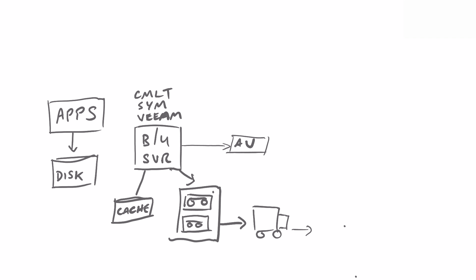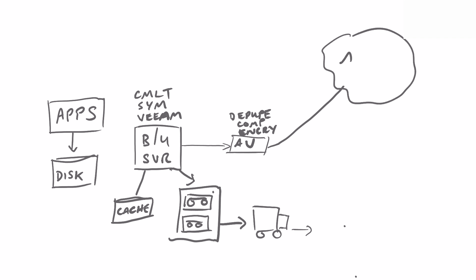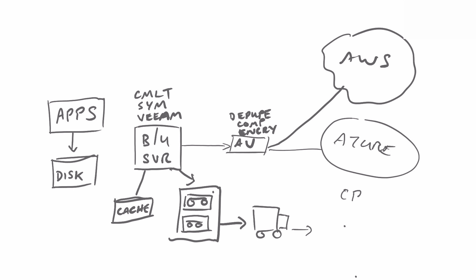AltaVault will do inline dedupe, inline compression, and inline encryption, and then send that data to a cloud provider of your choice. The most common ones are AWS or Azure, but it could also go to a private cloud object store such as OpenStack Swift or NetApp StorageGRID. Customers have seen anywhere from 10 to 30 times reduction in the amount of data coming in versus what actually has to be sent out to the cloud provider.